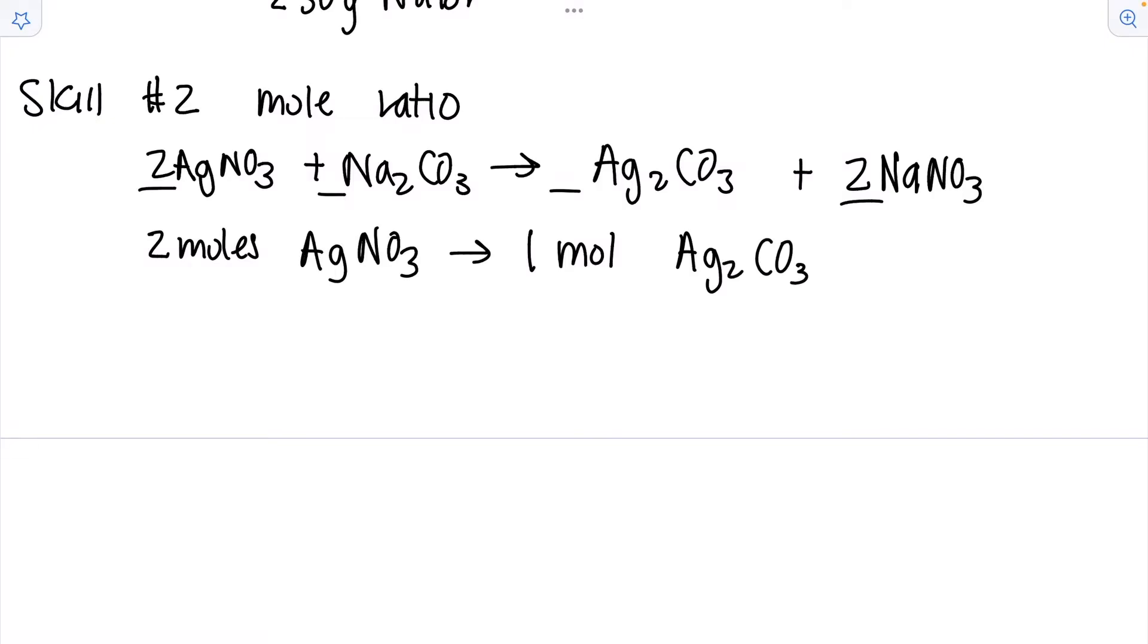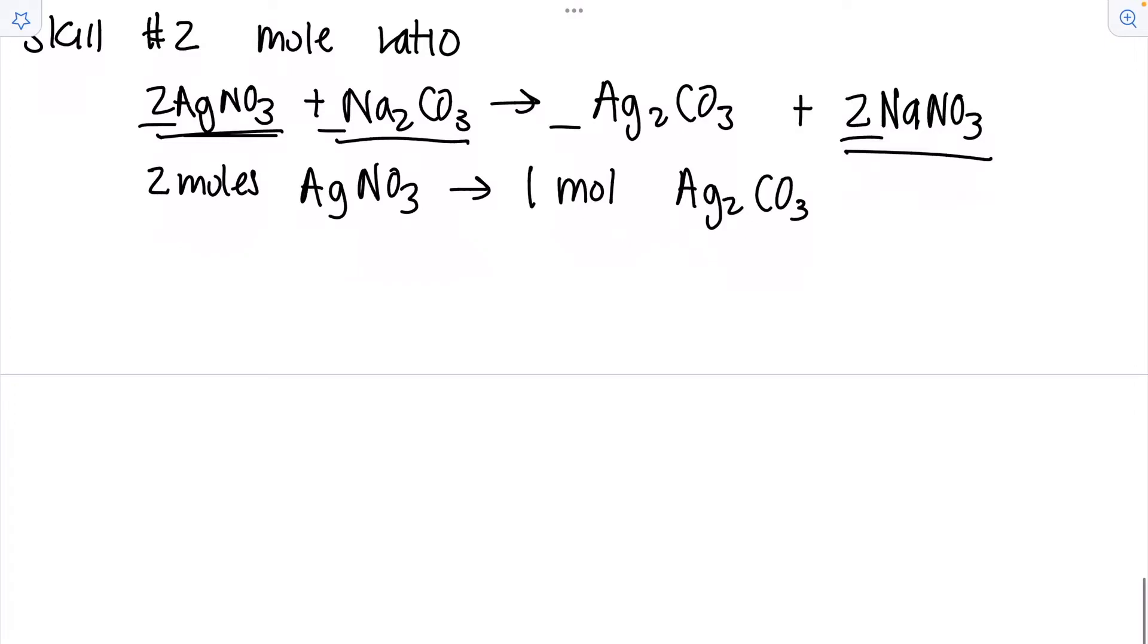And you can do this for any pairing here. Two moles of silver nitrate requires one mole of sodium carbonate. Two moles of silver nitrate will produce two moles of sodium nitrate, so on and so forth.